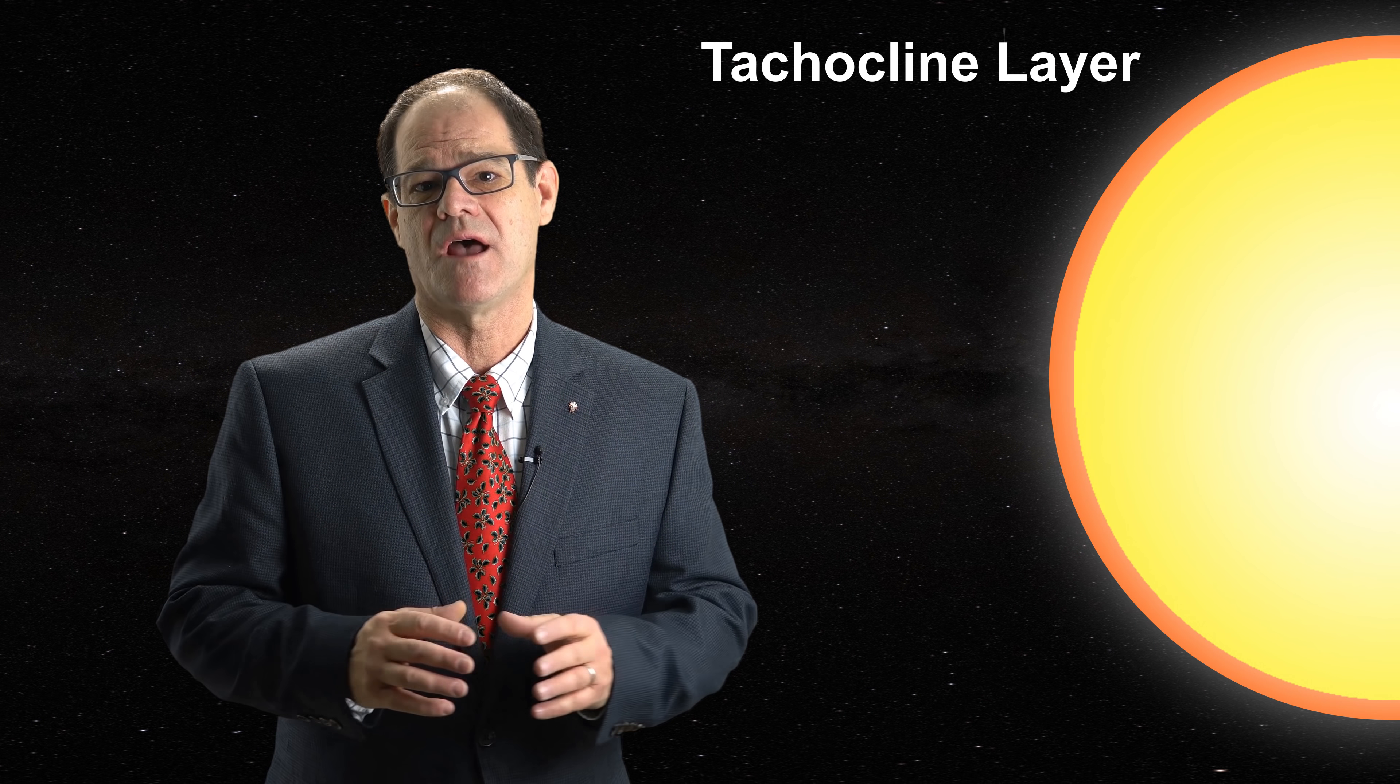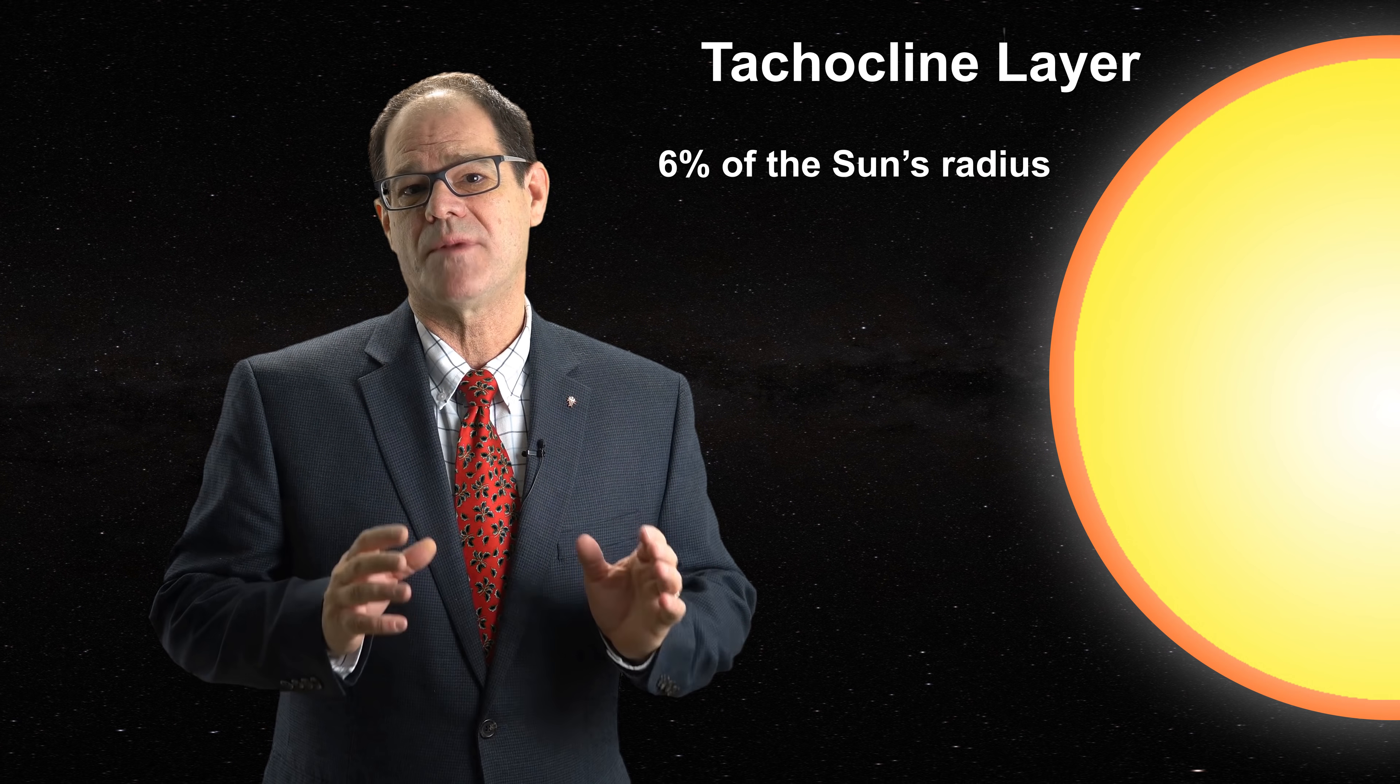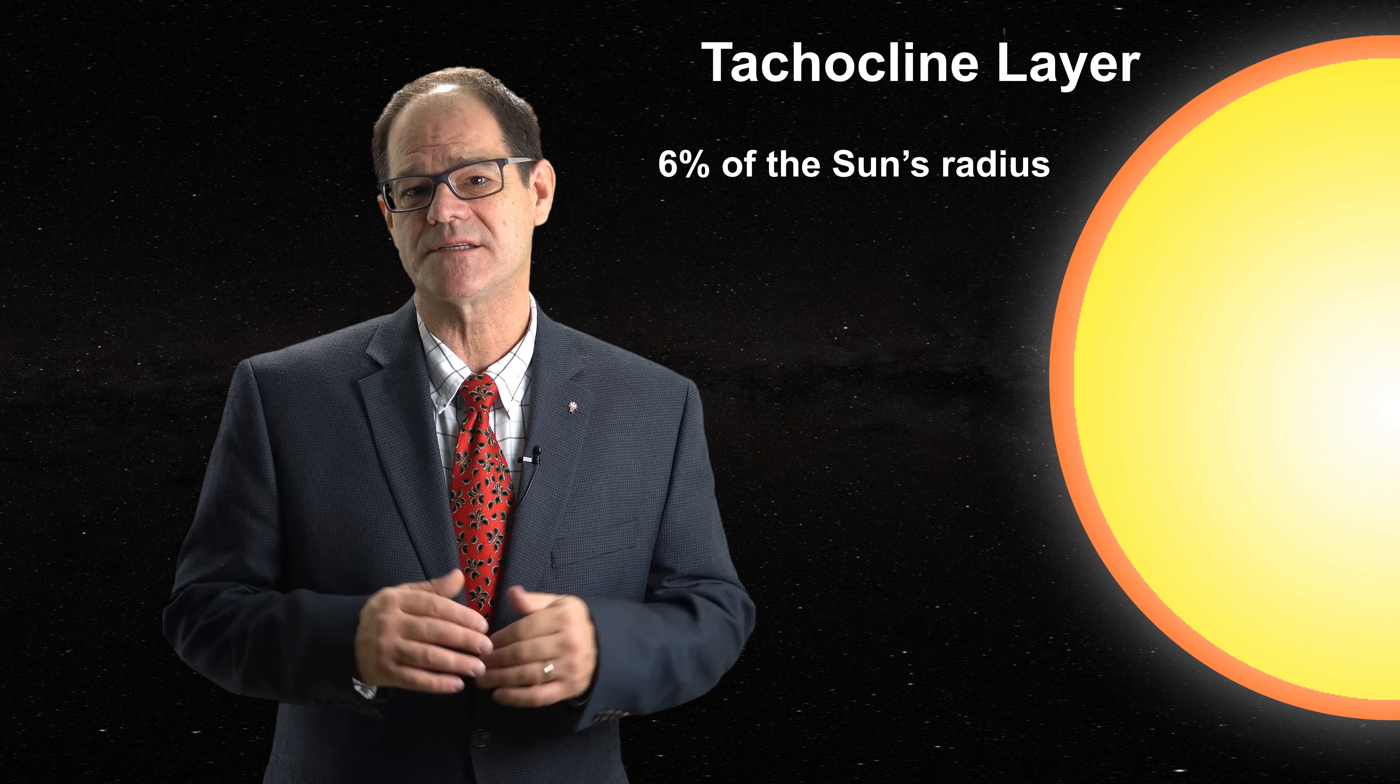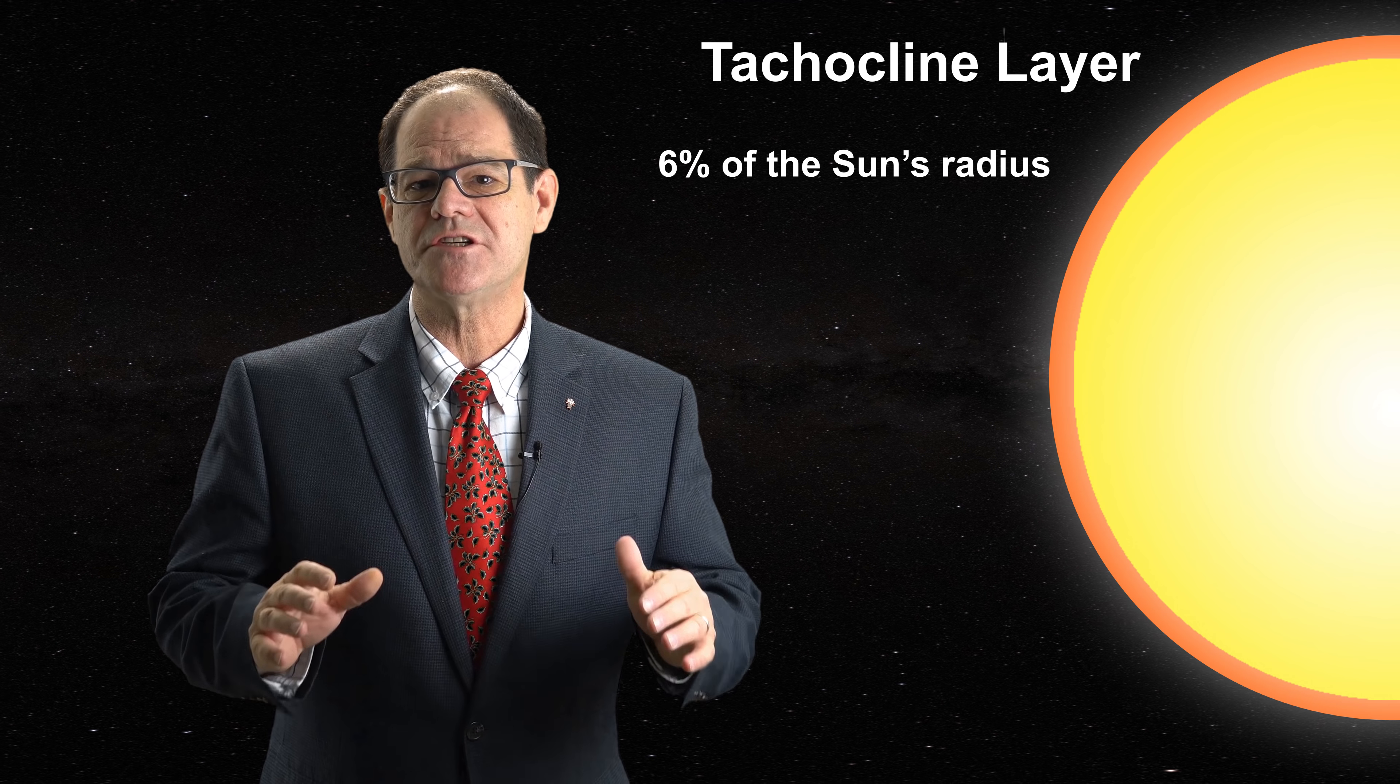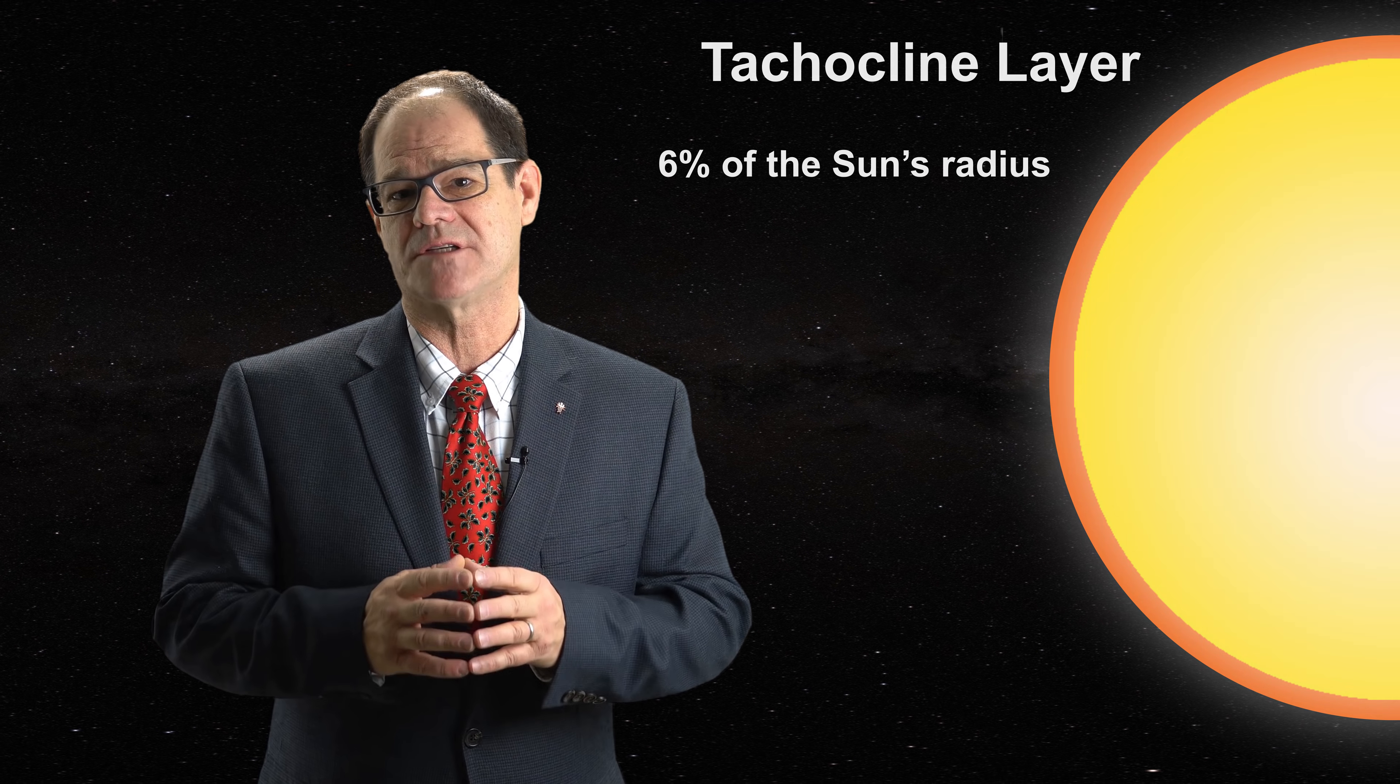Where the solid solar core meets the liquid body the tachocline layer exists. This region extends from about 0.64 solar radii to about 0.7 solar radii. The rotation of the core against this liquid causes huge shear forces in this region which have been verified by helioseismic studies.